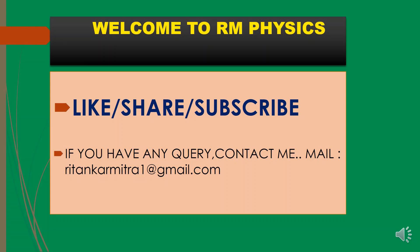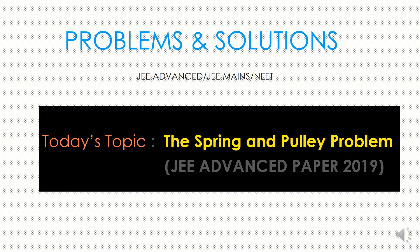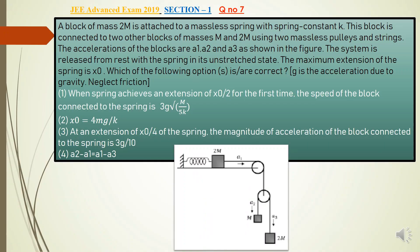Welcome to my channel. Today we will discuss the famous spring and pulley problem from the JEE Advanced paper 2019. A block of mass 2m is attached to a massless spring with spring constant k. This block is connected to two other blocks of masses m and 2m using two massless pulleys and strings. The accelerations of the blocks are a1, a2, and a3 as shown in the figure. The system is released from rest with the spring in its unstretched state. The maximum extension of the spring is x0. Given g is the acceleration due to gravity, neglect friction.